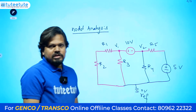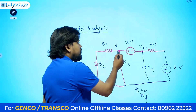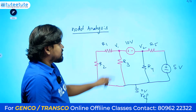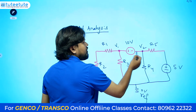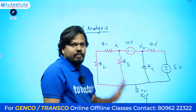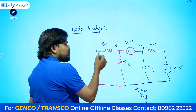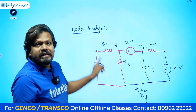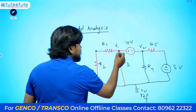For nodal analysis, we identify how many principal nodes are present — here there are three. A principal node is where more than two elements are connected. For example, at this node, three elements are connected, so it is a principal node. There is also a simple node, which is just a junction between two elements — only two elements are connected, so it is a simple node.